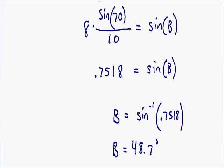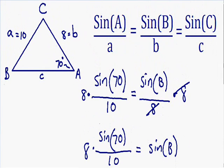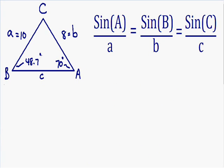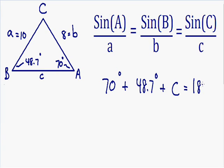Now we know angle B is 48.7 degrees, so let's plug that into our triangle. We now have two angles solved. Since all three angles of a triangle sum to 180 degrees, we know that angle A, which is 70 degrees, plus angle B, which is 48.7 degrees, plus angle C equals 180 degrees.